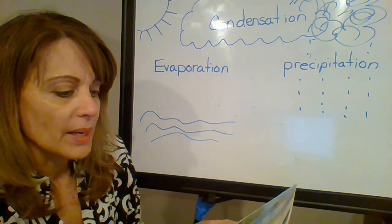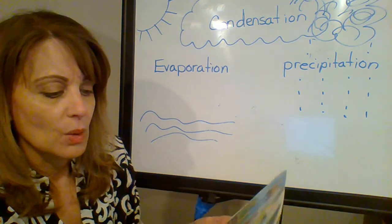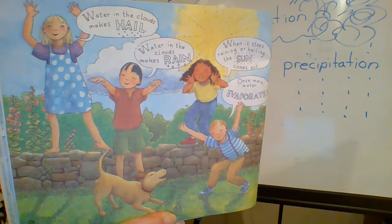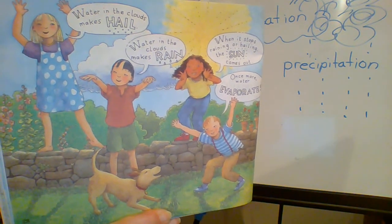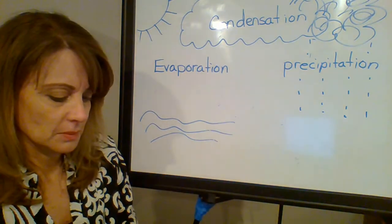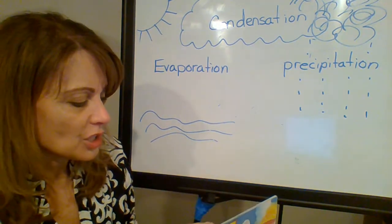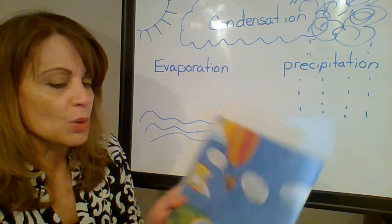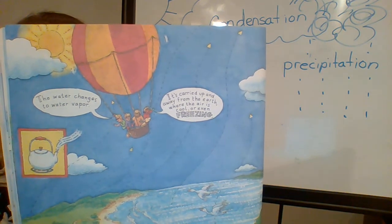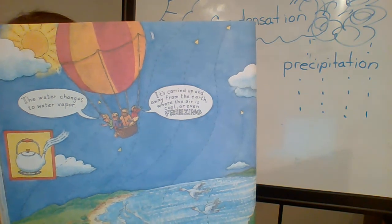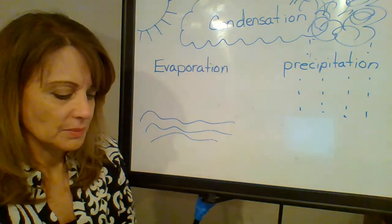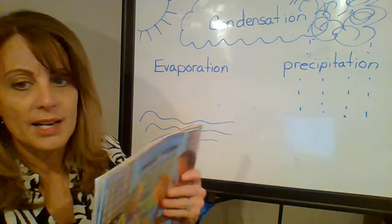Water in the clouds makes hail. Water in the clouds makes rain. When it stops raining or hailing, the sun comes out. Once more, water evaporates — from lakes, rivers, and oceans, from the leaves of plants and from the wet ground, from cows and horses, from cats and dogs, and from you and me. The water changes to water vapor. It's carried up and away from the earth where the air is cool or even freezing. When the water vapor cools, it condenses — the water vapor changes to water droplets, and altogether the droplets make clouds. Water droplets join together to make water drops. The drops fall to the earth from the clouds. Once more, it is raining.